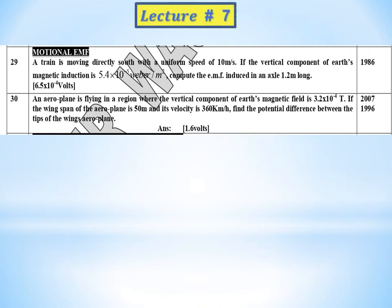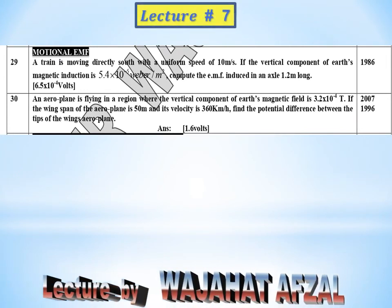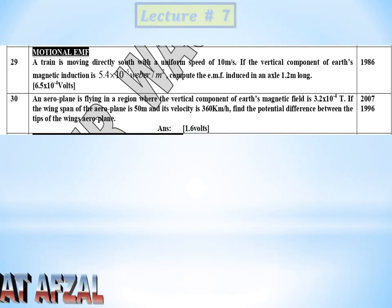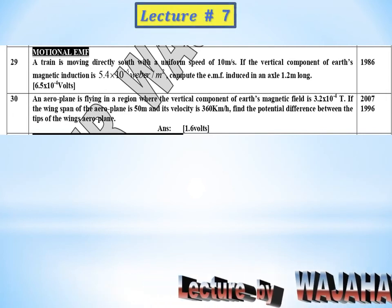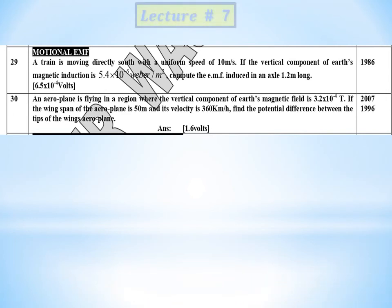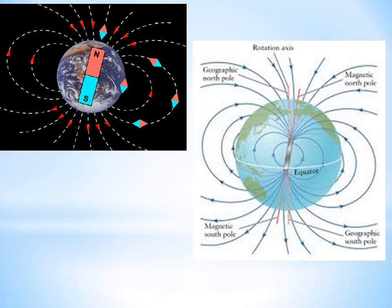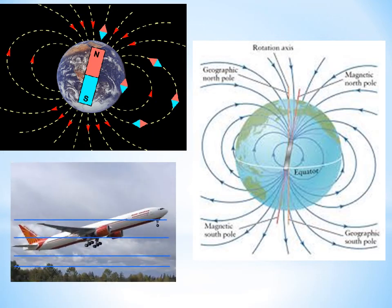In this lecture number seven, I am going to solve the problems on motional EMF — it has only two problems. First of all I am going to discuss the formulas I will use in this lecture. You need to know that our Earth is also a magnet and it has a magnetic field.